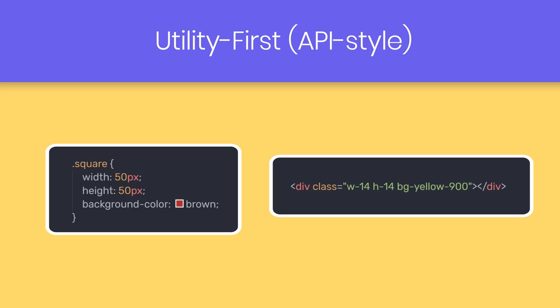But what if I told you that you don't need to write all these custom CSS rules or multiple CSS class names? Instead, you can write these rules directly into your HTML file, just like you write inline styling. This is what we call the utility-first approach — or utility-first API style — to style the elements of a web page.